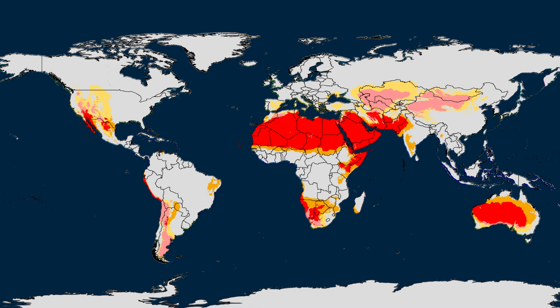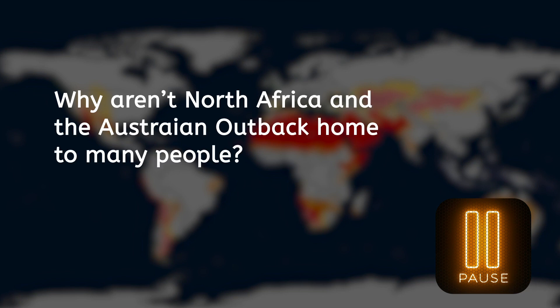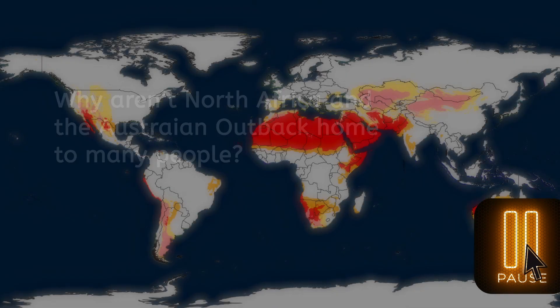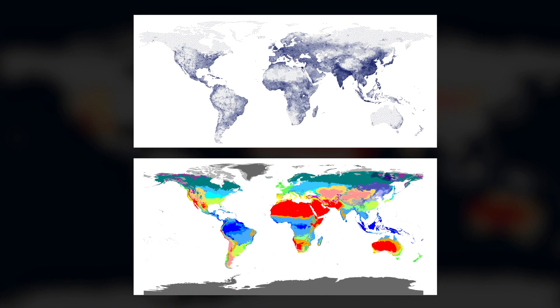We haven't visited these places in the course yet, but using your background knowledge, can you infer a reason that North Africa and the Australian Outback aren't home to many people? Record your thoughts in the lesson guide. If you said that these places are extremely dry, or that they are deserts, you're off to a great start. A comparison of the two maps will show that, to a certain extent, we can predict the population density of an area based on its climate.